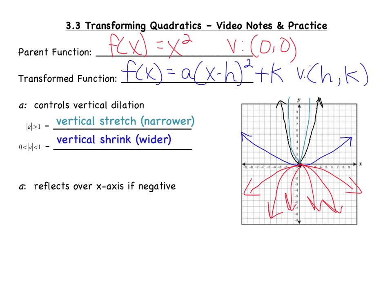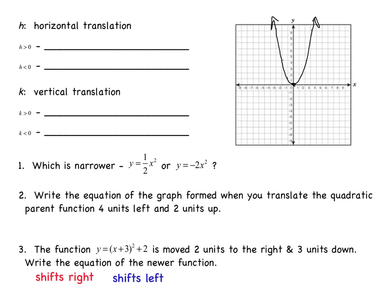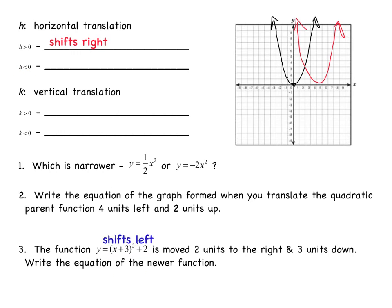Now let's move on to the h and k values. The h value represents a horizontal translation, meaning it will shift the graph to the left or to the right. If your h value is greater than 0, your parabola will shift to the right. If your h value is less than 0, your parabola will shift to the left. Please keep in mind my drawings here are not perfect — I'm literally moving it to the right or to the left, so I apologize that these do not sit perfectly on the x-axis.